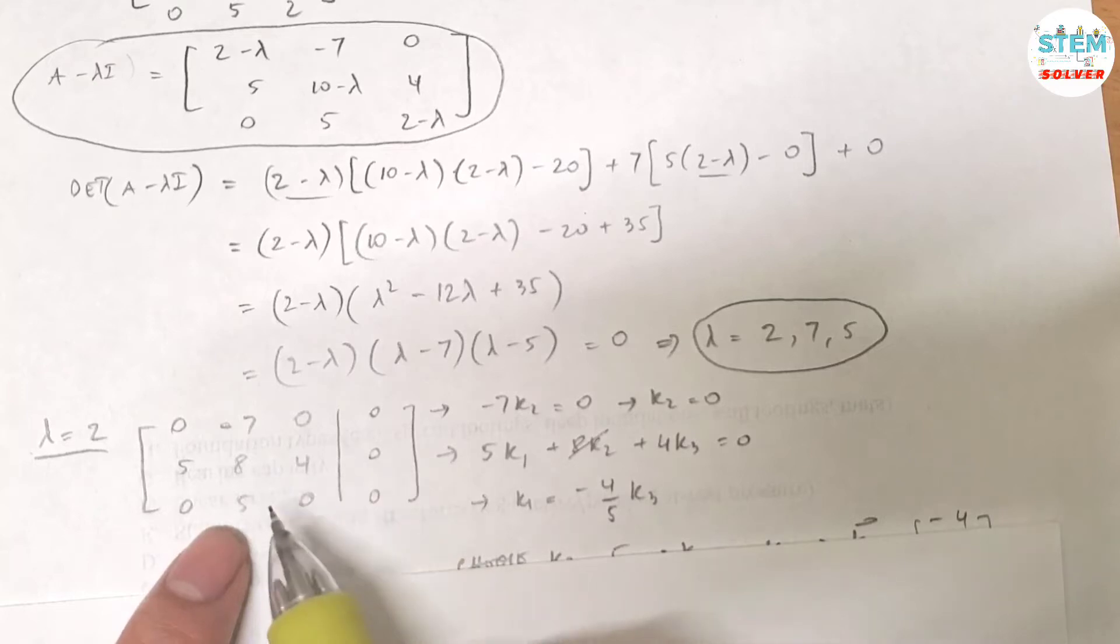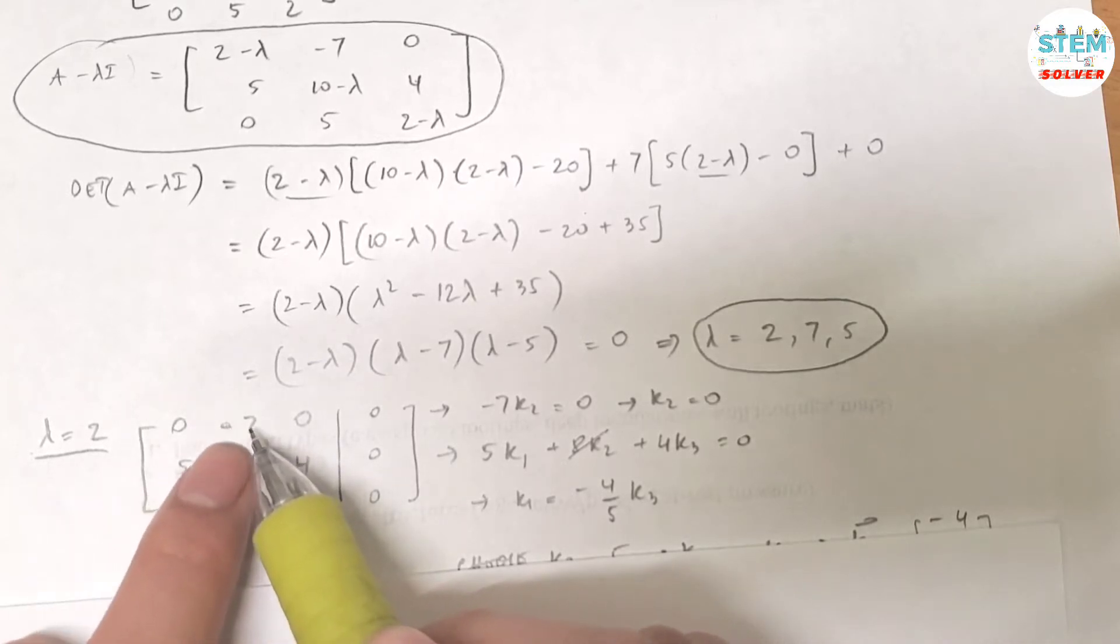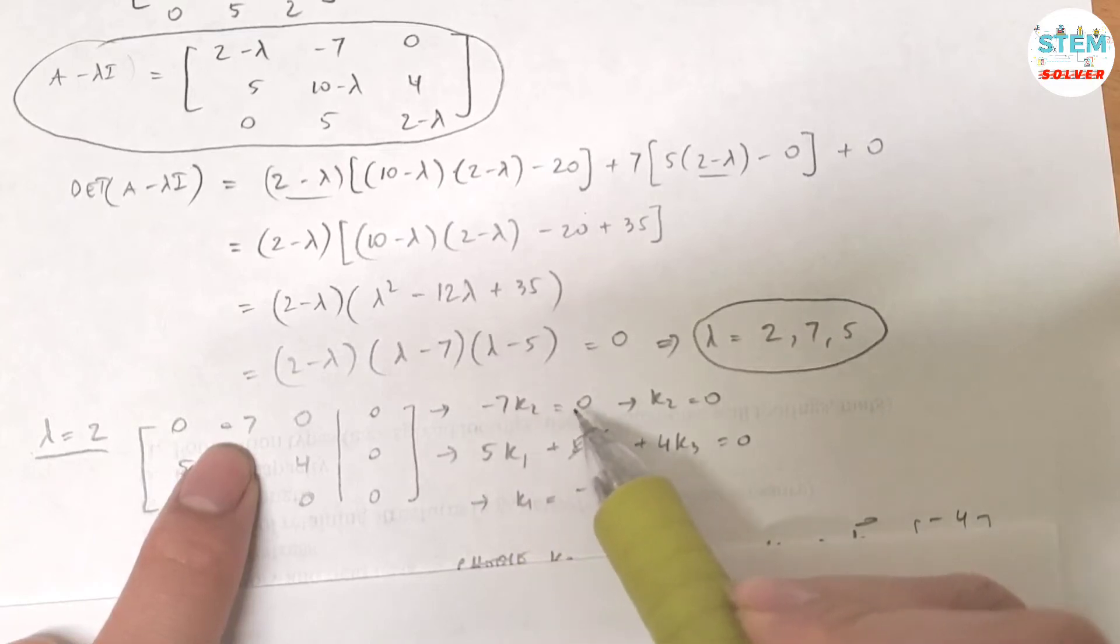So look over the matrices, I see that this matrix and this matrix equals 0. And you have only one variable, which is k2. So let me use the first equation. So I have negative 7k2 equals 0. Then very quickly I found out that k2 equals 0.